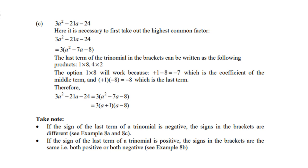So the last term of the trinomial in the brackets can be written as following: 8 is 1 times 8, or 4 times 2. Now the option 1 times 8 will work, because a 1 and a negative 8 gives me a negative 7, which is the coefficient of the middle term. And I've also, positive 1 times negative 8 is negative 8, which is the last term. So therefore, it is working.